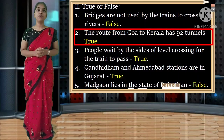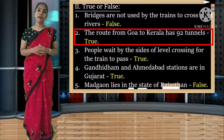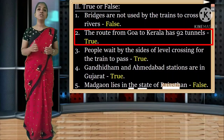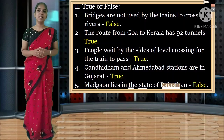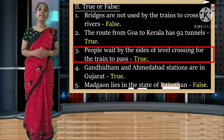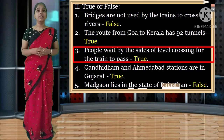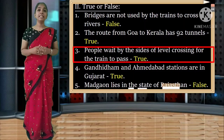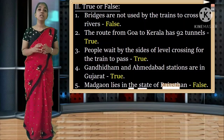Second: the route from Goa to Kerala has 92 tunnels - it is true. From Goa to Kerala there are 92 tunnels. Third: people wait by the side of level crossing for the train to pass - it is true. People will stand by the side of level crossing. Spelling: T-R-U-E.